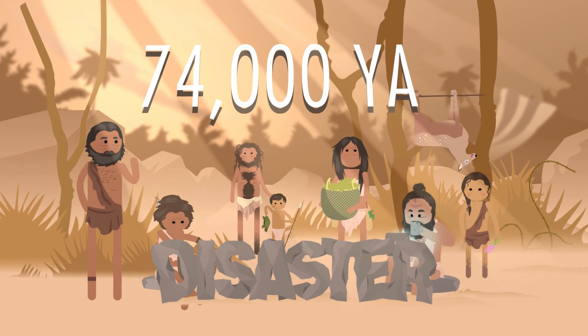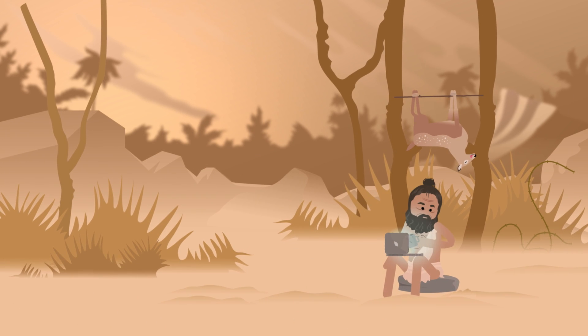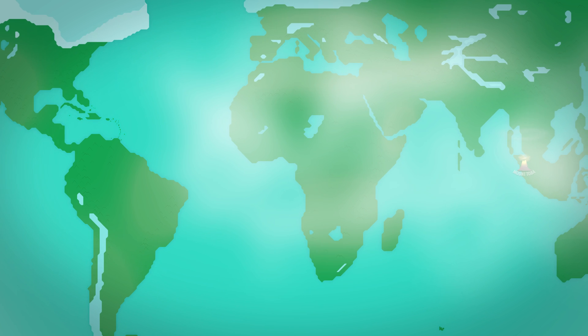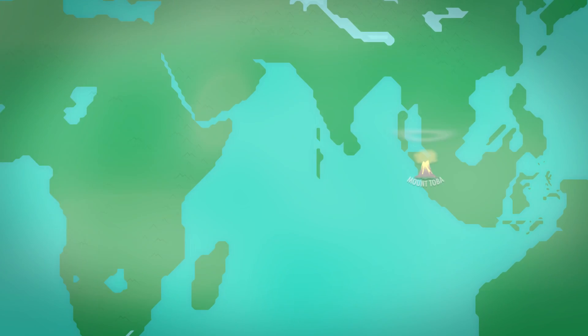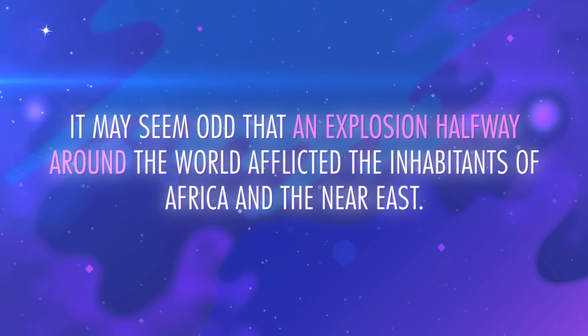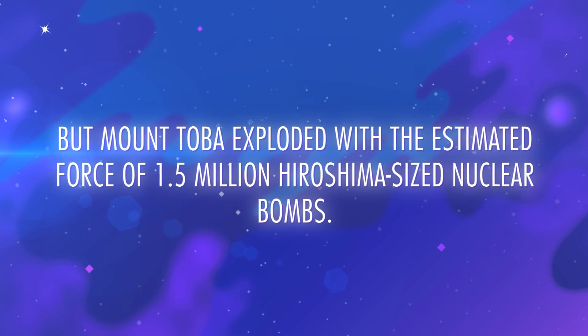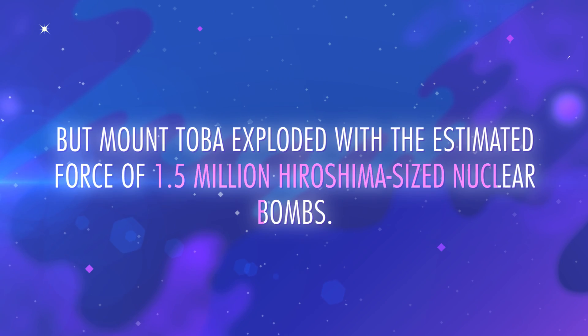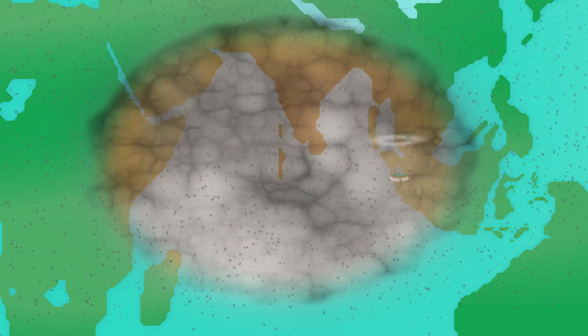Around 74,000 years ago, the gene pool contracted significantly and shrank to only about 3,000 to 10,000 people in the entire world. The best explanation we have for this, among a number of other contenders, is the super eruption that happened around that time at Mount Toba on the island of Sumatra in present-day Indonesia. A layer of volcanic ash, an average of 15 centimeters thick, settled over everything in South and East Asia, but also in India, Arabia, and as far as East Africa.